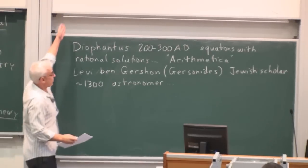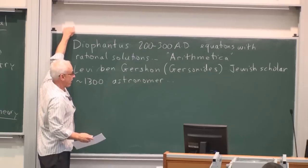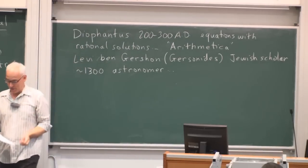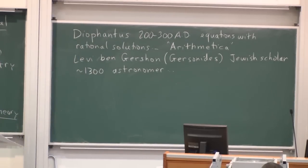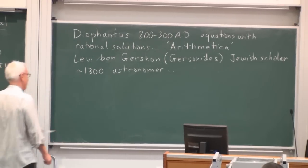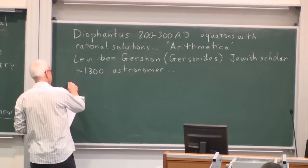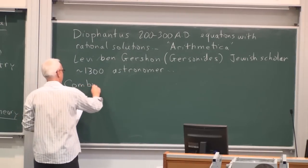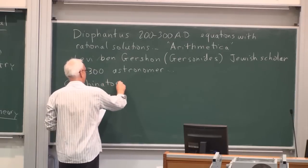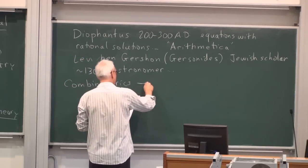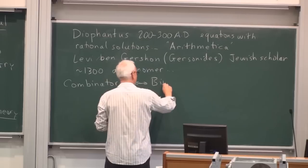And he was a Jewish scholar who lived around the time of 1300. He was also an astronomer. And he was very instrumental in discussing combinations and permutations. So, of course, the binomial theorem goes back long before that. We have Pascal's triangle going back to the Chinese and so on. But Levi Ben Gershon was perhaps the first one to understand the combinatorial significance of Pascal's triangle and the binomial theorem.